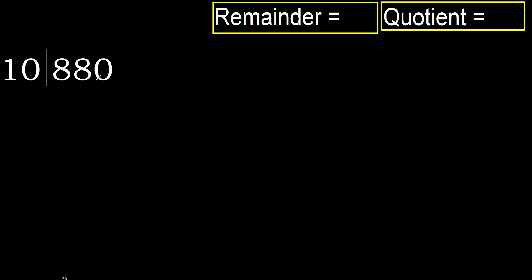880 divided by 10. 8 is less, therefore next. 88 is not less, therefore, with 88.